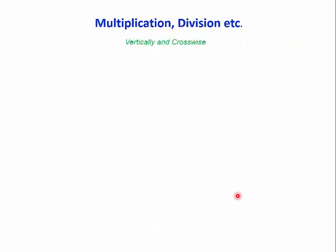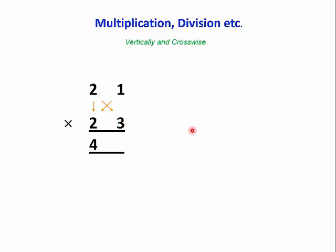We've got this beautiful vertically and crosswise multiplication pattern, which enables us to multiply any two numbers together in one line from left to right or right to left. If we wanted to multiply 21 by 23, we first multiply the tens: two times two is four. Then we multiply crosswise — one times two gives two, and two times three gives six — and add them up: two and six is eight. That goes in the middle. Then to complete the pattern, we multiply on the right: one times three is three.